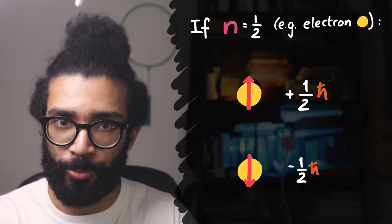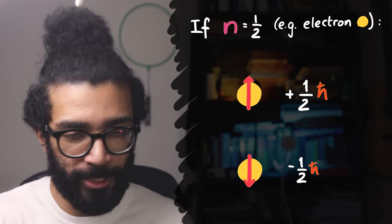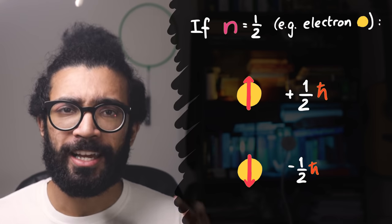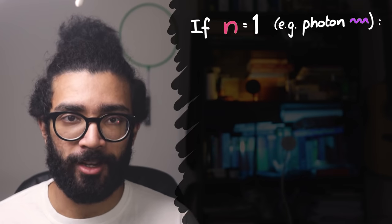So for an electron, there's two possible states. One with the angular momentum plus half h-bar, and the other with the angular momentum minus half h-bar. Let's look at another example. I said earlier that a photon is a spin one particle.